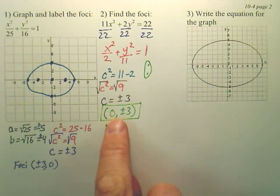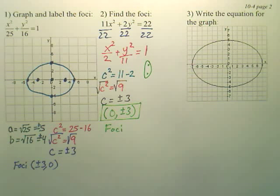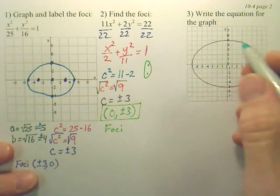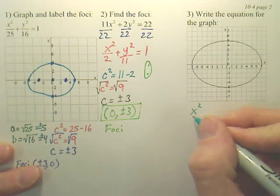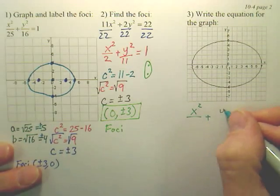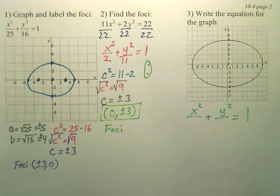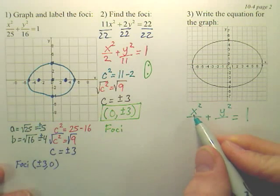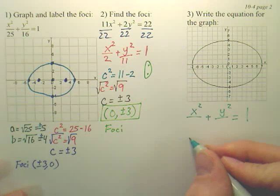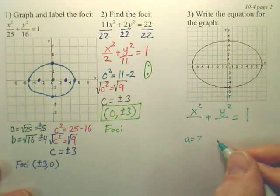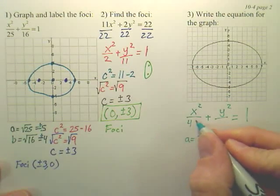Those would be your foci. So be careful. A lot of times people put plus or minus 3, comma 0. But what you have to realize, again, is this is going to be stretching up and down. Last problem. If I want to write the equation for this graph, well let me go back to this form. All right. So we're going to have x squared over something plus y squared over something equals 1. Now I want to find the two numbers underneath. Well to find the x value, what you do is you count over. How far is this? That's 7. So let's think. If a equals 7, doesn't that mean a squared is going to be 49?